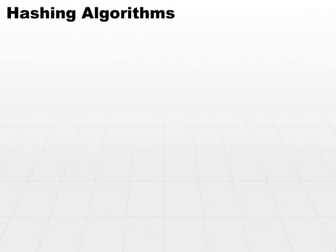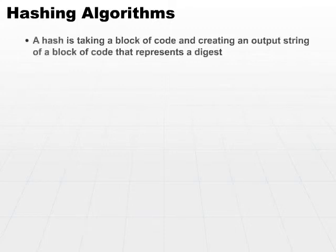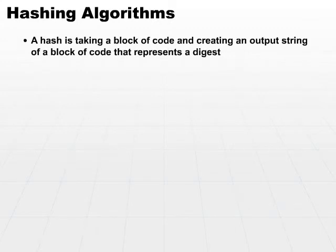Let's take a look at another category of algorithms. We'll look at a couple of hashing algorithms. A hash is taking a block of code and creating an output string that represents a digest or message digest, similar to a CRC.